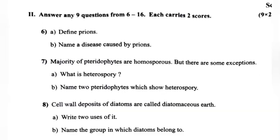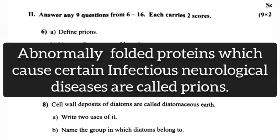Question 6: Define prions. Answer: Abnormally folded proteins which cause certain infectious neurological diseases.